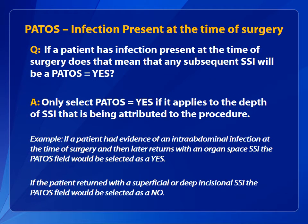Another question we get is: if a patient has infection present at the time of surgery, does that mean that any subsequent SSI will automatically be PATOS equals yes? The answer is no. The PATOS field should only be marked yes when it applies to an SSI event that is at the same level as the infection that was present at the time of surgery. For example, if a patient had an intra-abdominal infection at the time of surgery and then later returns in the surveillance period with an organ space SSI, the PATOS field would be yes. However, if the patient returns with a superficial or deep incisional SSI, the PATOS field would be no.